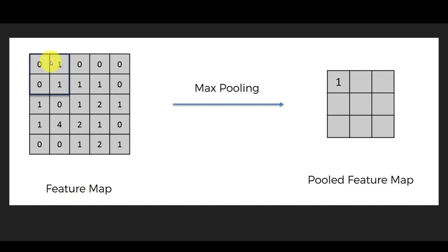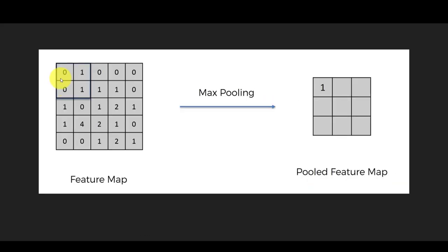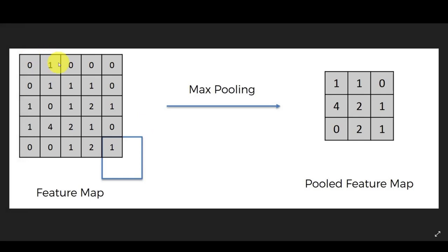Max pooling reduces the convoluted image to a smaller image. With a 2×2 pooling window, we take the largest value from each 2×2 block. For example, from values 0, 1, 0, 1 the maximum is 1; from 0, 0, 1, 1 the maximum is 1; from 0, 0 the value is 0. Try this on your own with the values shown and you'll arrive at the pooled output.